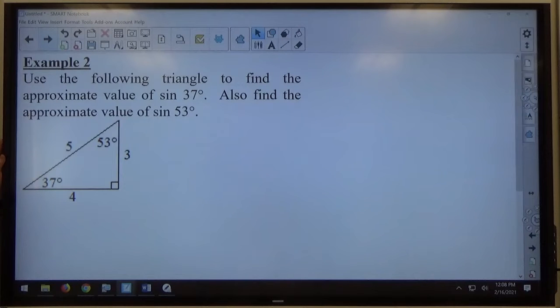Those aren't the exact angle measures, but they're pretty close. I want to say it's more like 53.13 and 36.87. But just for the sake of what we're doing, we're going to approximate these. They're giving us this information, and they want the following triangle to find the approximate value of sine of 37 and sine of 53.